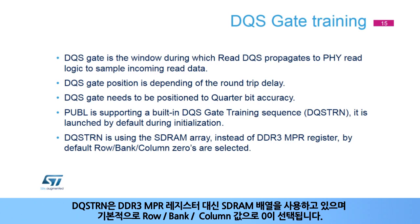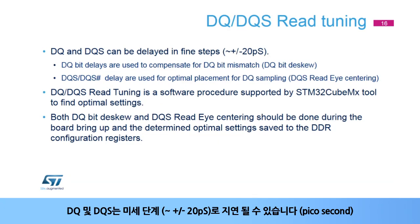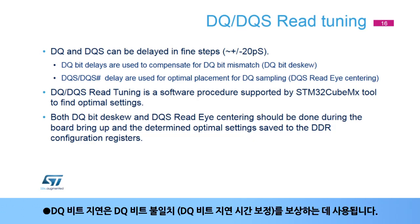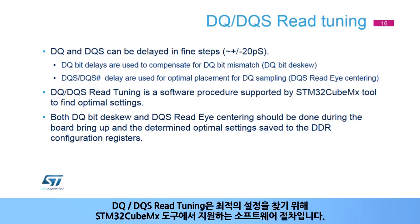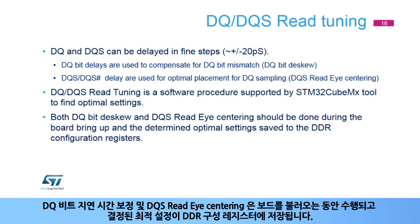DQSTRN uses the SDRAM array instead of the DDR3 MPR register. By default, row, bank, and column zeros are selected. DQ and DQS can be delayed in fine steps of plus or minus 20 picoseconds. DQ-bit delays are used to compensate for DQ-bit mismatch, or DQ-bit de-skew. DQS and DQS# delays help optimize placement for DQ sampling, or DQS read eye-centering. DQS read tuning is a software procedure supported by the STM32CubeMX tool to find optimal settings. Both DQ-bit de-skew and DQS read eye-centering should be done during board bring-up, with optimal settings saved to the DDR configuration registers.